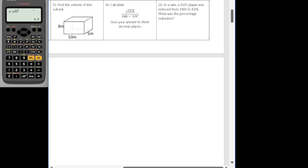And question 12. Find the volume of this cuboid. So we've got all values in meters. So all we're going to do is 8 times by 10 times by 5 to find the volume. So we're looking at 400 meters squared. Or even as it's a volume, meters cubed.